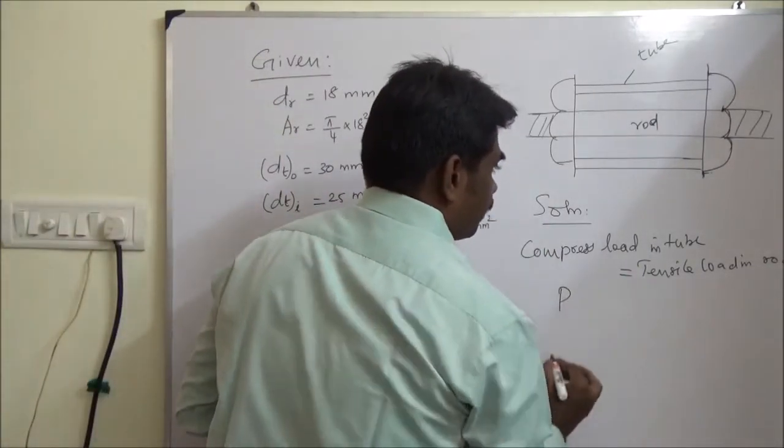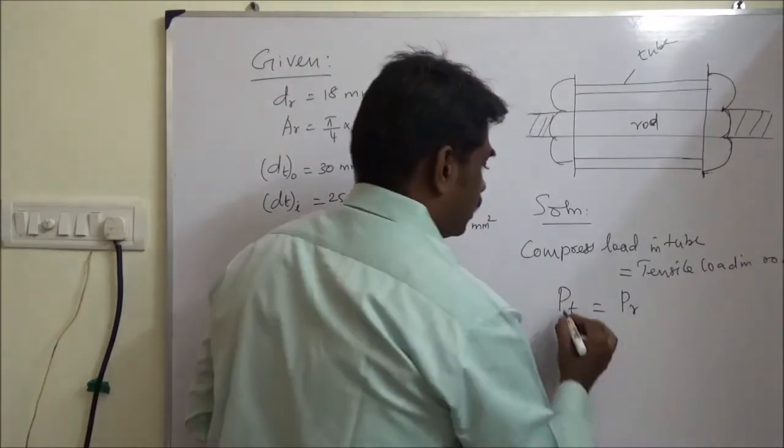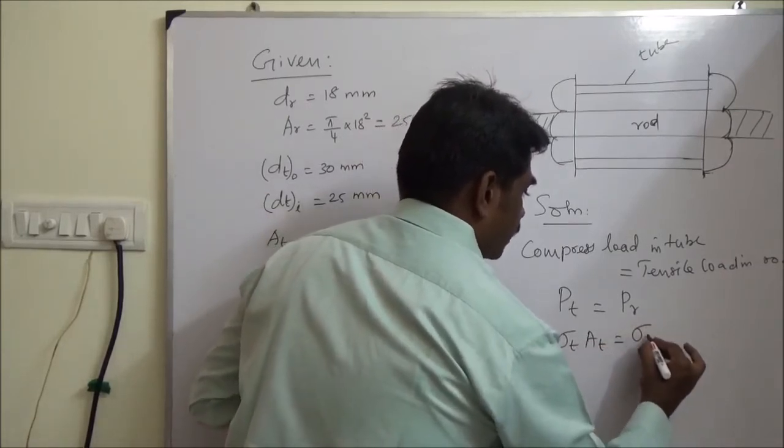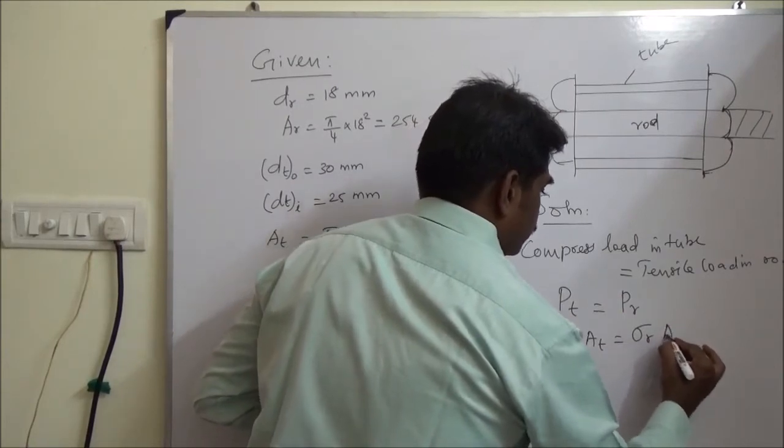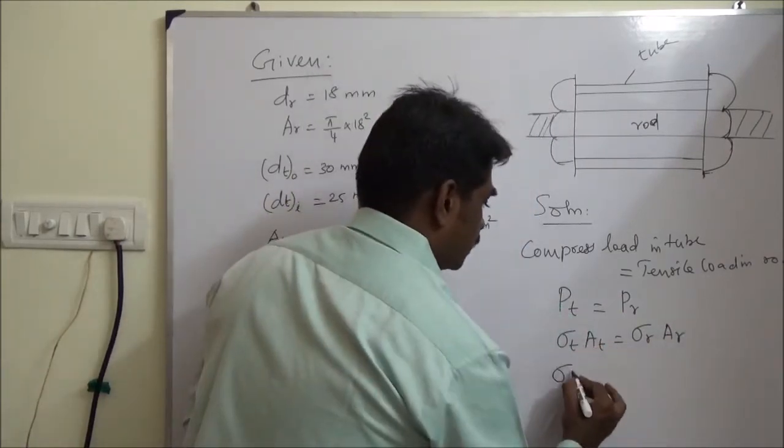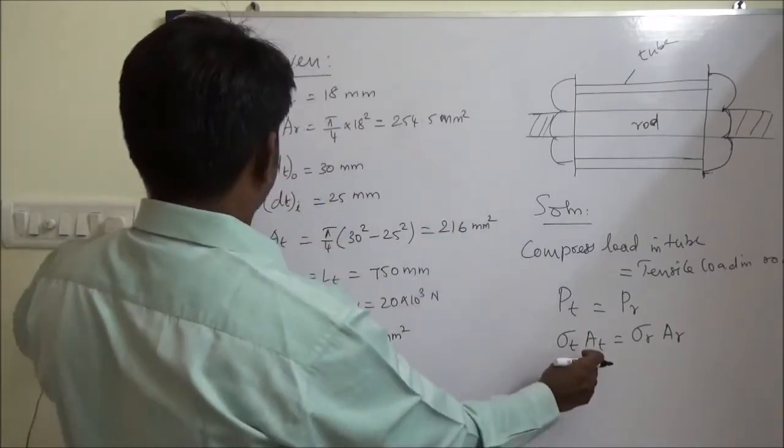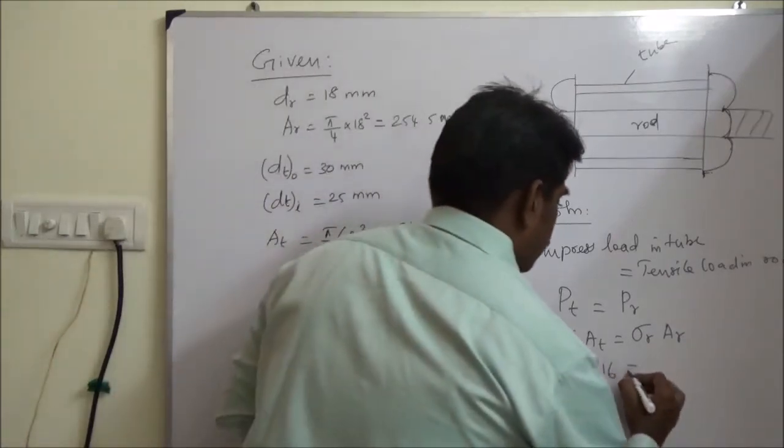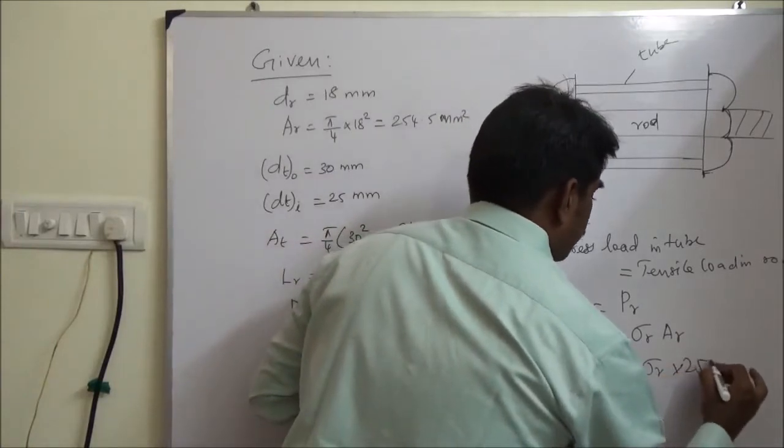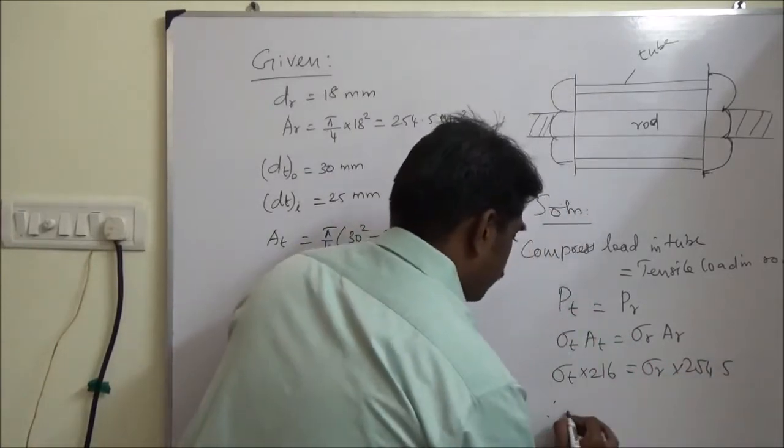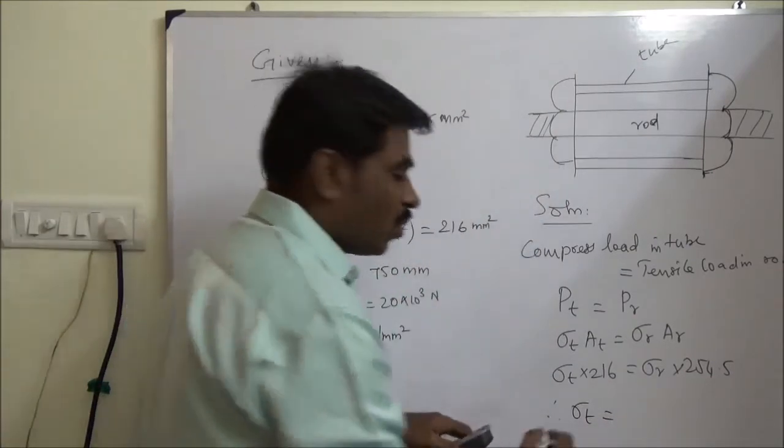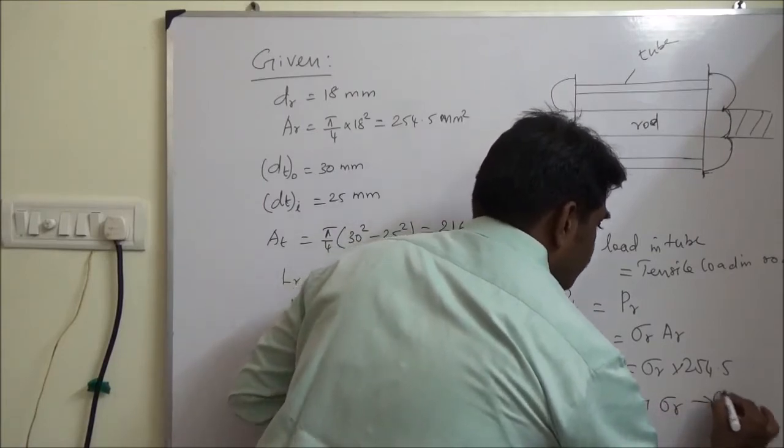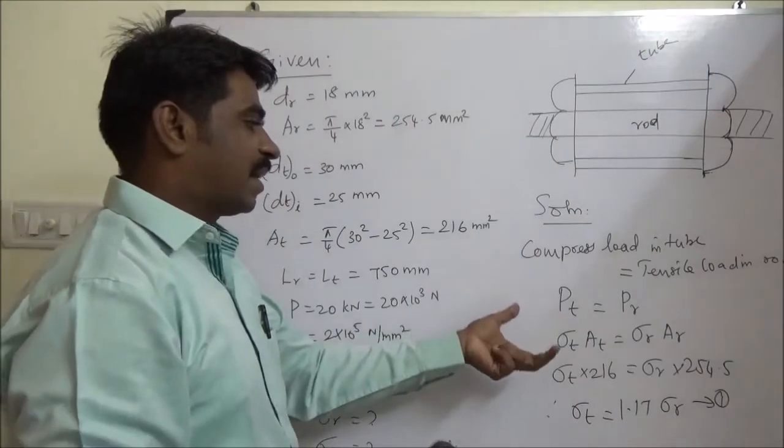So we can call this Pt, Pr. So it could be written as Pt area tube 216, area 254.5. Therefore, sigma T is 1.17 of sigma r. We have this relation.